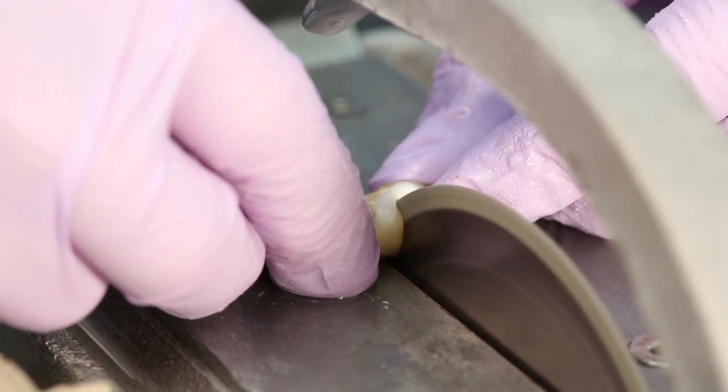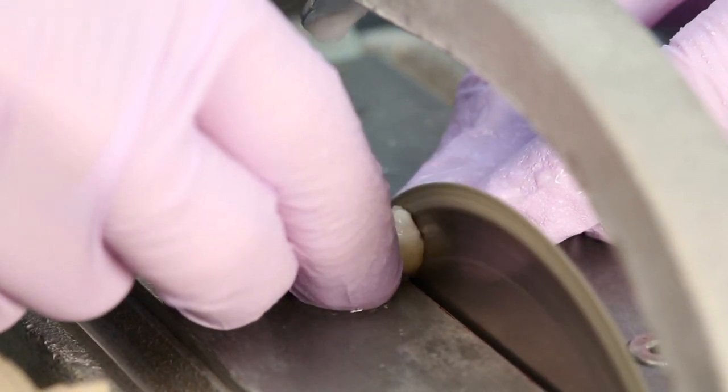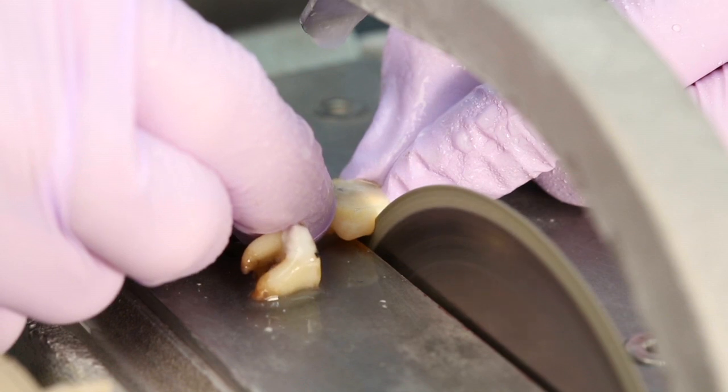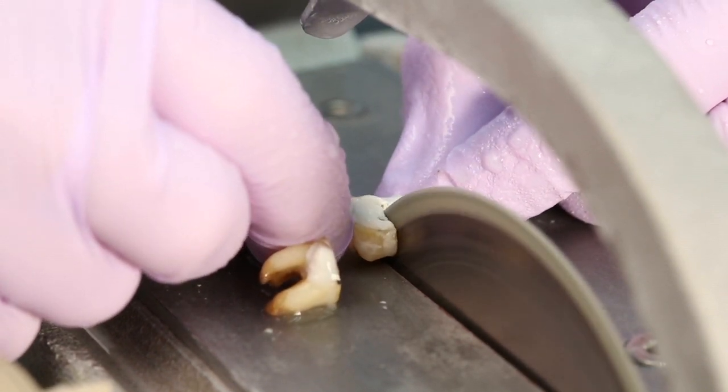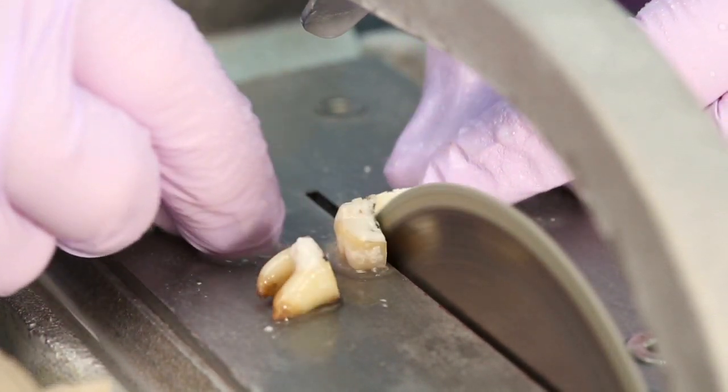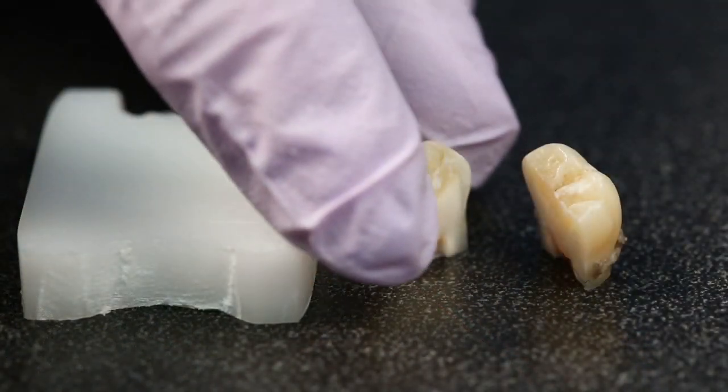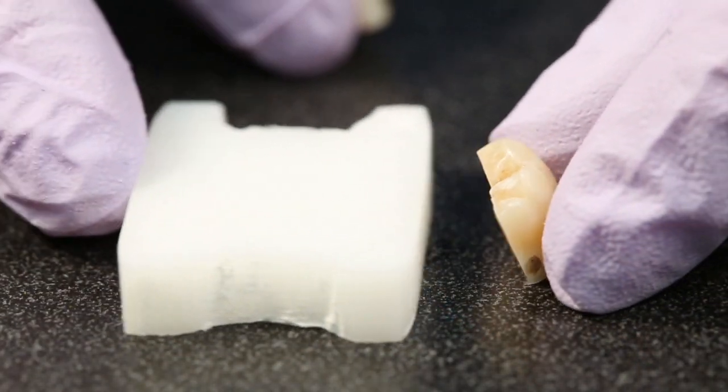Cut the roots off at the furcation, being careful not to cut away any of the crown. Section the remaining crown, mesial to distal, as this will allow for maximum dentin exposure. Grind enamel flat on the uncut side of the tooth.